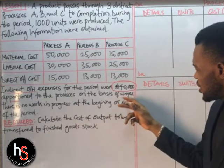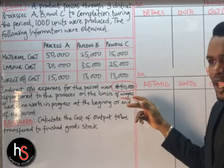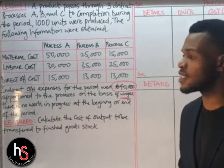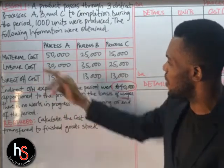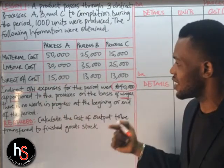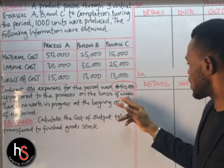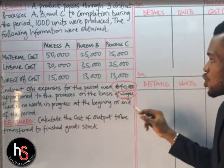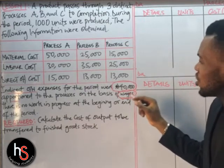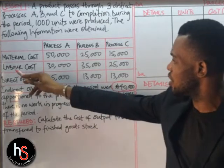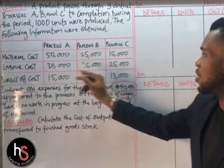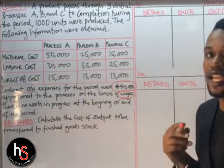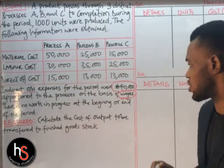What do we think about wages? Whenever we hear wages, the next thing that should come to mind is labor. Looking back at the question, we have material cost, labor cost, and direct overhead cost. Because of these wages, and because it is going to be apportioned, it simply means we apportion it on the basis of wages — for process A, B, and C — under the labor cost. There is no work in progress at the beginning or end of the period.